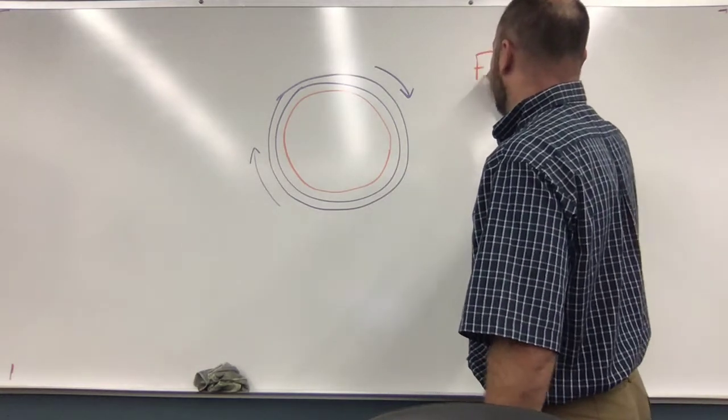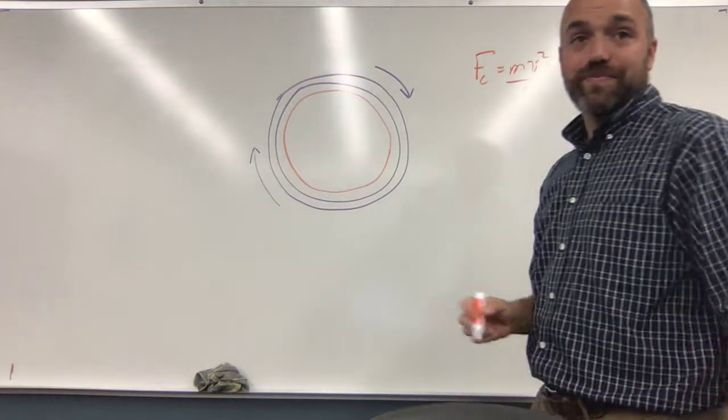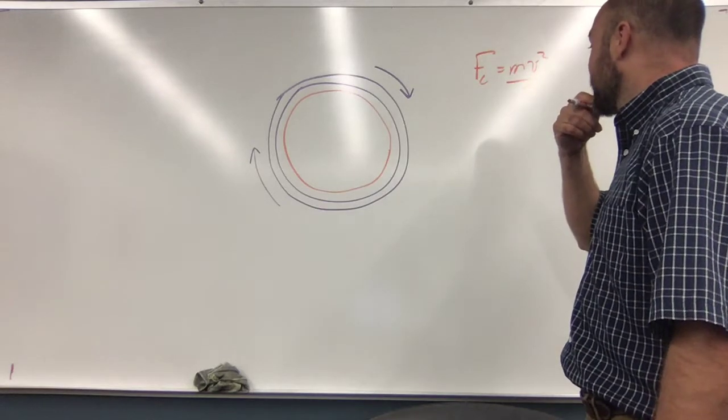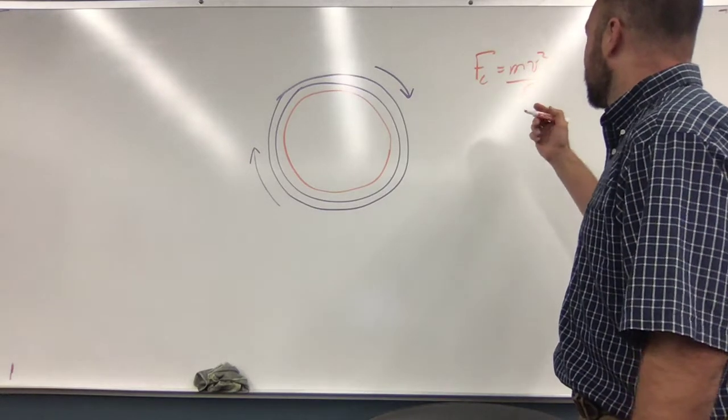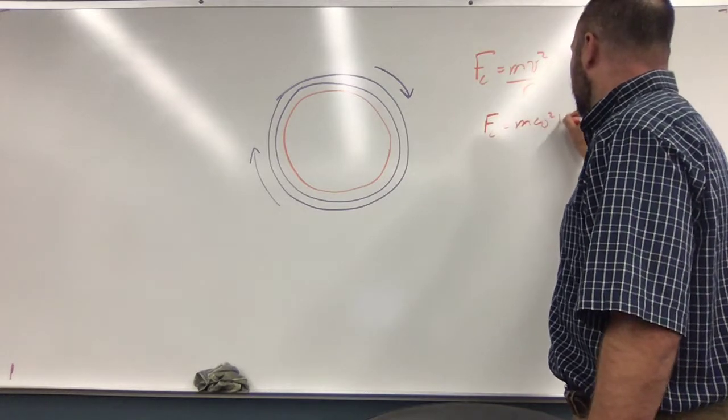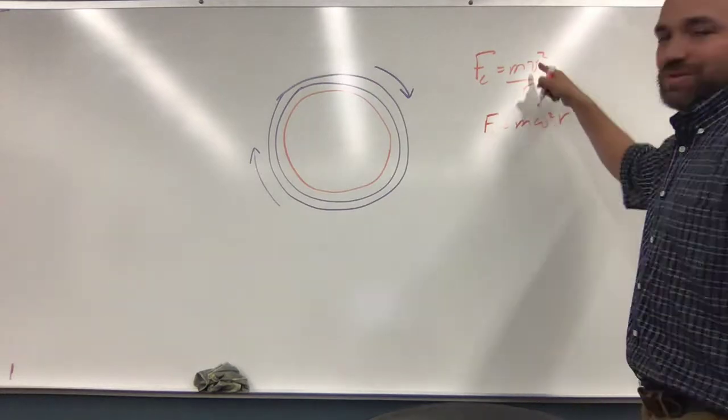Anyway, the equation here is centripetal force is equal to mv squared over r. In other words, wait, let me try this again. Centripetal force is equal to m omega squared times r. In other words, you remember that these are the same equations, right?